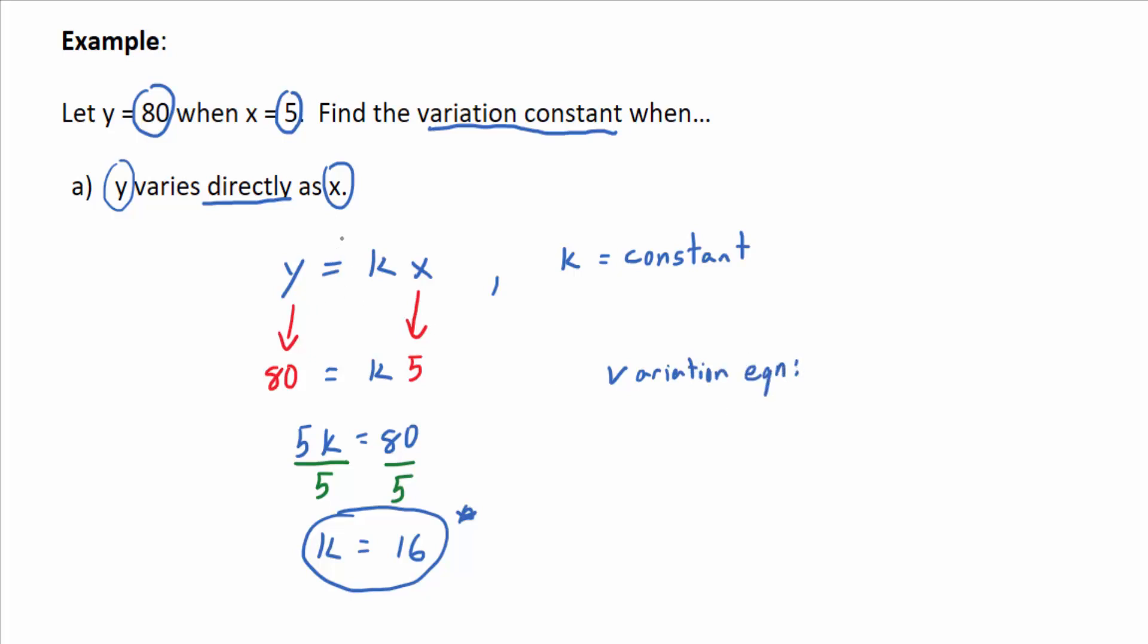And I just want to point out what that is. You just fill this in with what k is equal to. So y equals 16 times x. It's just a linear equation in this case. So that's the variation equation where k is 16.